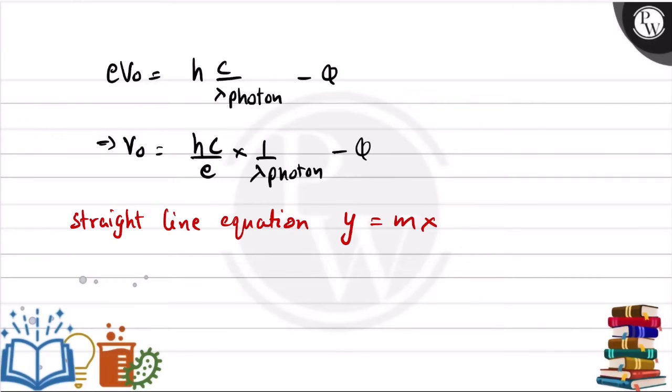This is a straight line equation, which implies y equals hc by e times x minus phi. So our graph is a straight line, comparing this we can see that m equals hc by e and c equals minus phi, where m is the slope and c is the intercept.